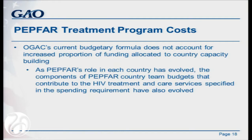However, the current budgetary formula does not account for an increased proportion of funding allocated to country capacity building. There are budget codes in another category pertaining to country capacity building, consistent with the Leadership Act's goal to promote transition to greater sustainability and country ownership. These areas include strengthening health systems, laboratory infrastructure, and strategic information — some of which also contribute to care and treatment. As PEPFAR continues to evolve, a greater share of resources will go into these budget codes, but there is currently no methodology for including them in the budgetary formula.